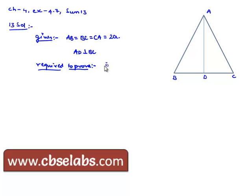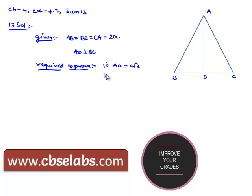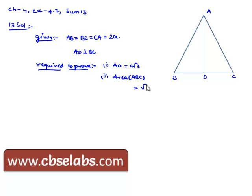First, AD is equal to A root 3. Second, area of triangle ABC is equal to root 3 A square.